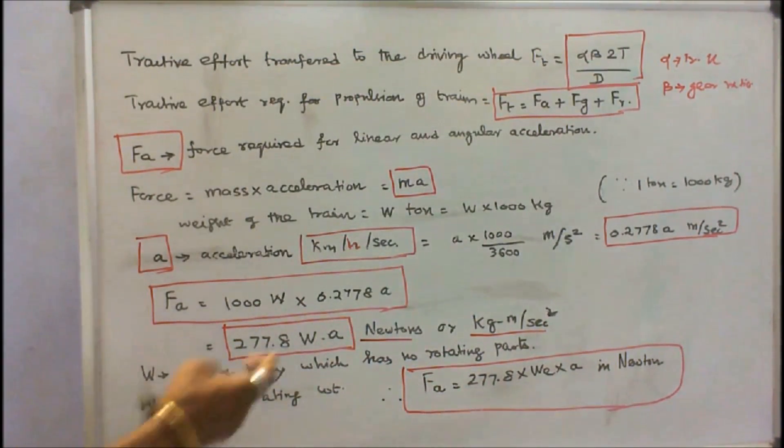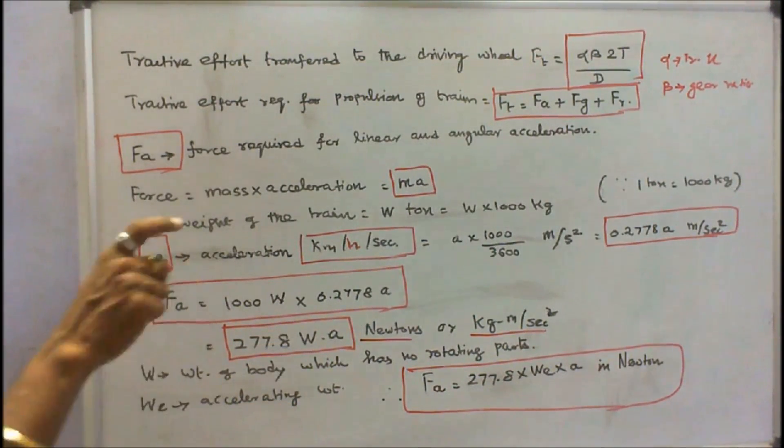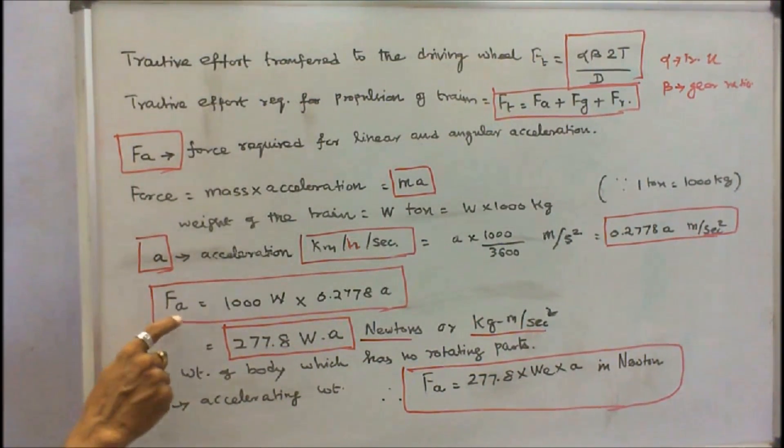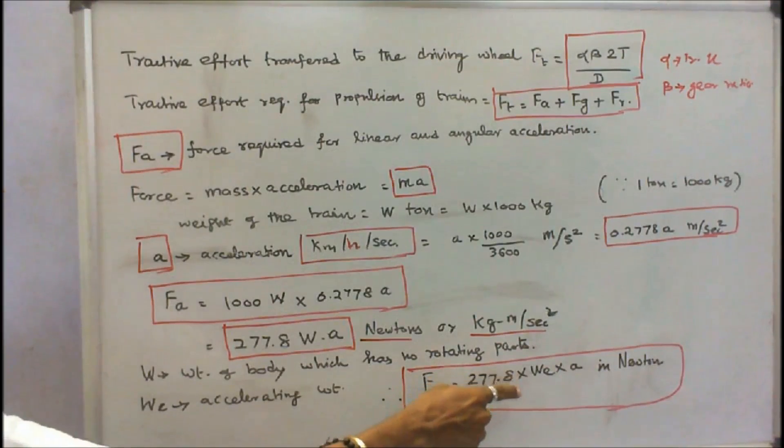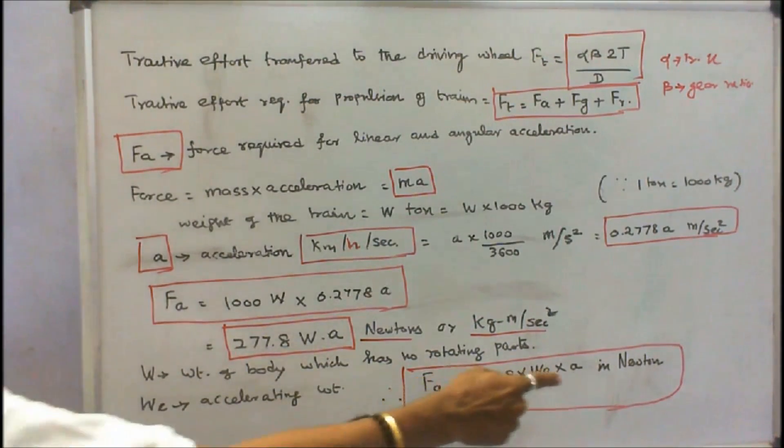W is the weight of the body which has no rotating parts. And already we know what is the accelerating weight. W equals accelerating weight which is more than the dead weight. Therefore FA is equal to 277.8 into W into A, where W is accelerating weight and A is acceleration in meter per second square, in newtons.